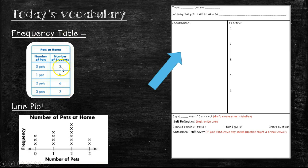So in other words, reading this frequency table, we would know that three students don't have any pets. Four students have one pet. How many students have two pets? That's right, six. And how many students have three pets? Two. That is a frequency table, and that's one way to show data.